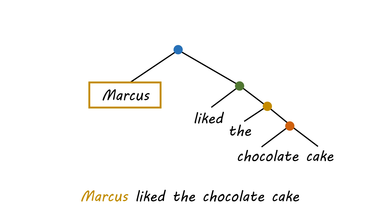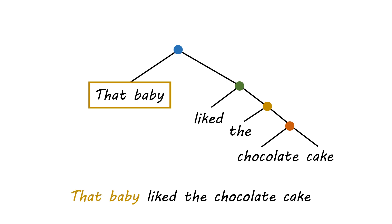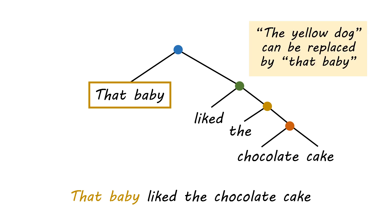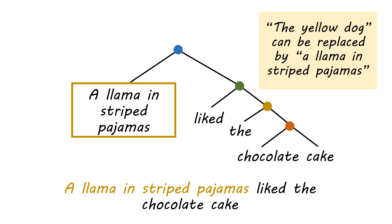We can plop the name Marcus into that slot - or really anybody's name - and it makes a perfectly good sentence: "Marcus liked the chocolate cake." We could also plop a multi-word phrase like "that baby" - "that baby liked the chocolate cake." Or something even longer: "a llama in striped pajamas liked the chocolate cake." We can replace that chunk with a lot of different things.